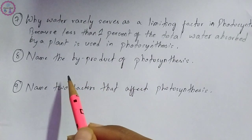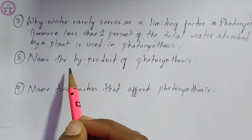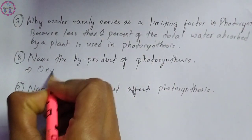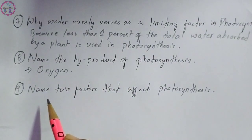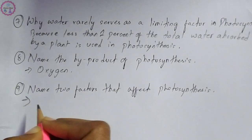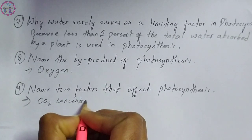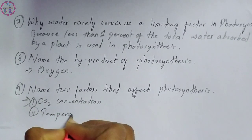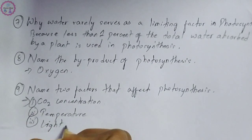The next question: name the byproduct of photosynthesis. The byproduct of photosynthesis is oxygen. The last question: name two factors that affect photosynthesis. There are many factors, but you have to write any two — for example, temperature or light intensity.